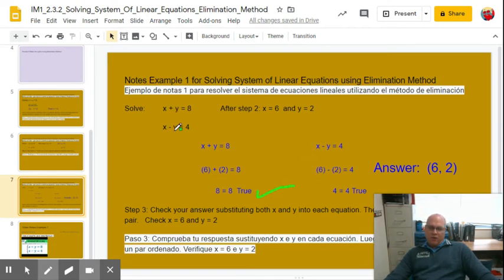All right. x minus y equals 4 is our second equation. Again, I substitute 6 for x, I substitute the 2 for the y. So it's 6 minus 2, which gets me 4 equals 4. That's a true story. So it checks.